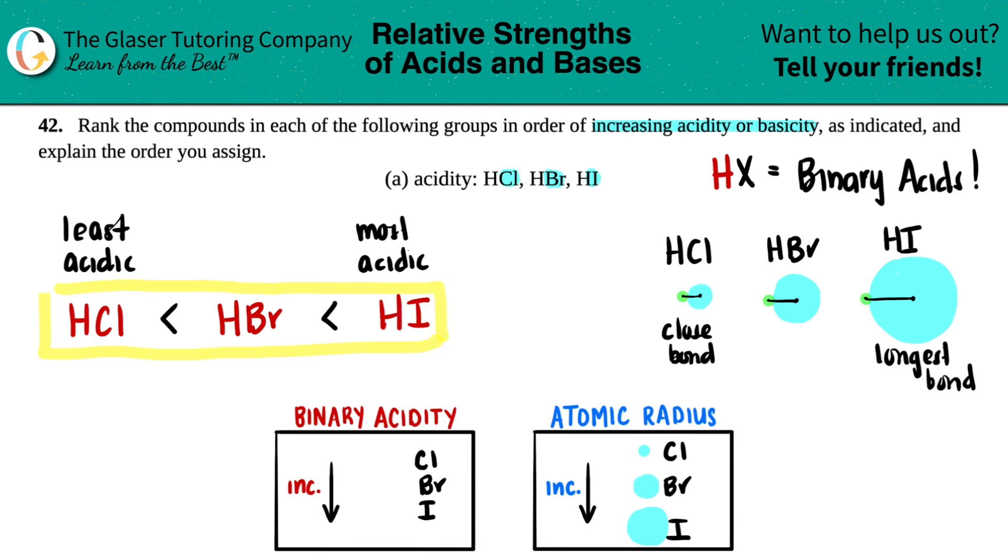It's just because iodine has the largest radius. We'll just say over here atomic radius increases from left to right as well, and that's why the higher the radius, the more acidic. And there you go.